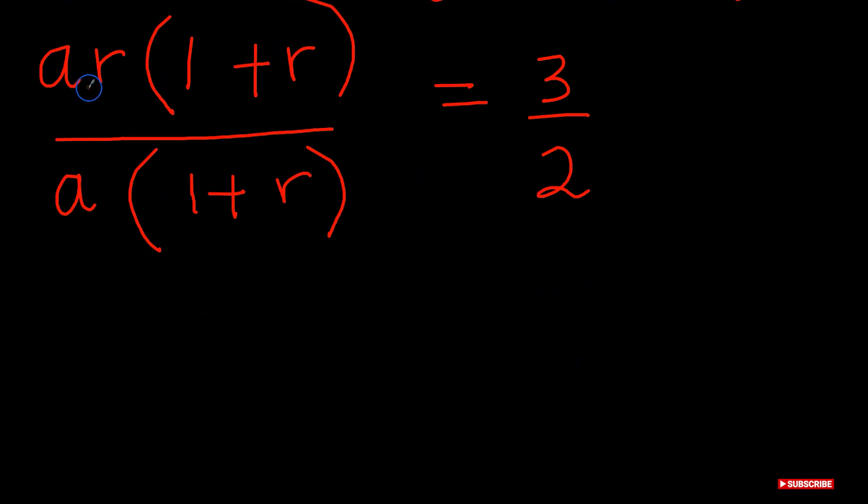Now what you can see is that a and a will cancel, 1 plus r and 1 plus r will cancel, and then what we're left with is r equals 3 over 2. And this is your final answer.